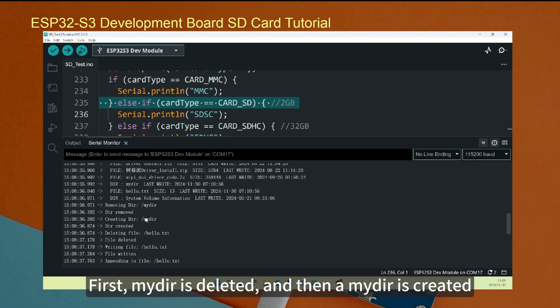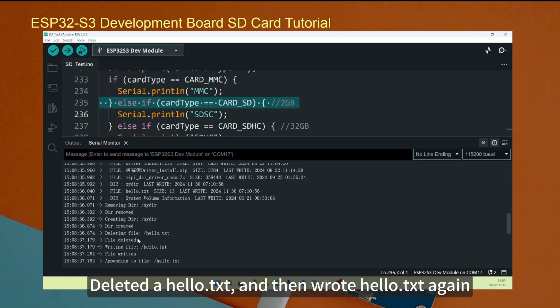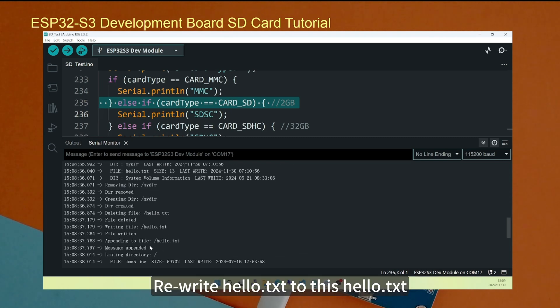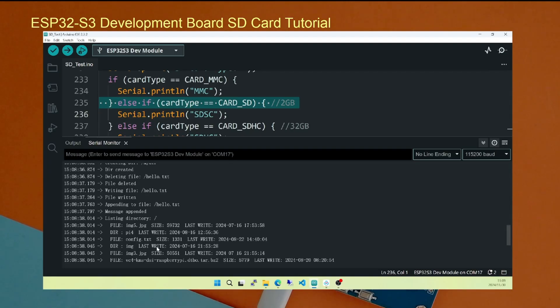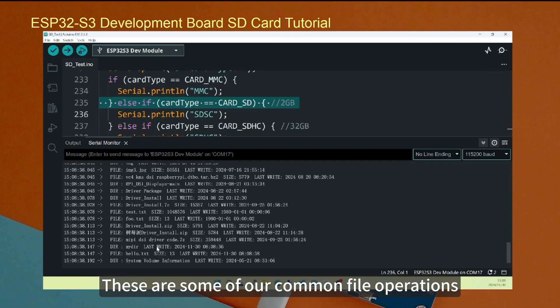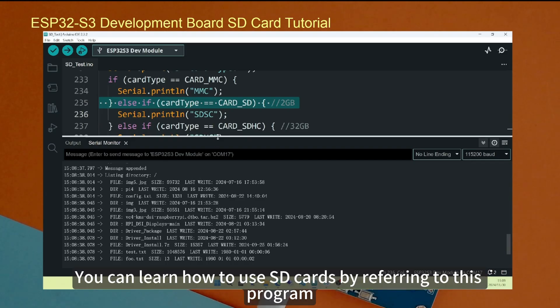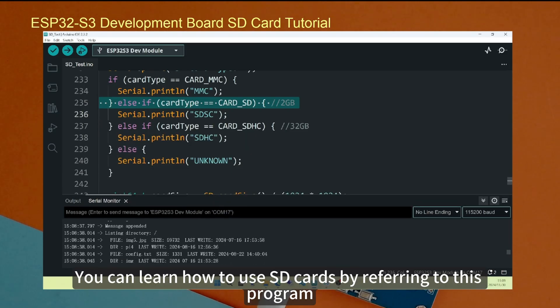Created a directory and deleted a directory. First, a directory is deleted and then created. Deleted a hello.txt and then wrote hello.txt again. Wrote to this hello.txt. These are some of our common file operations. You can learn how to use SD cards by referring to this program.